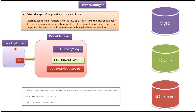Suppose from this Java application we want to establish a database connection to the MySQL database. Then the Java application will send a connection request to the Driver Manager. The Driver Manager will check the connection request and from that it will come to know it has to establish a database connection to the MySQL database. Then from the list of drivers it will identify which JDBC driver can make a connection to the MySQL database.